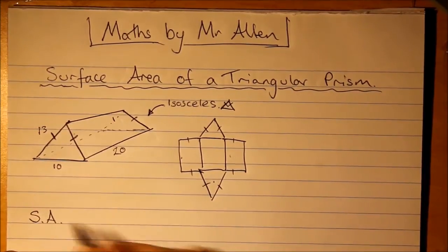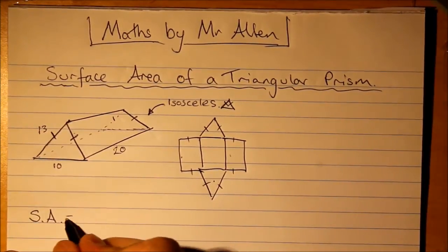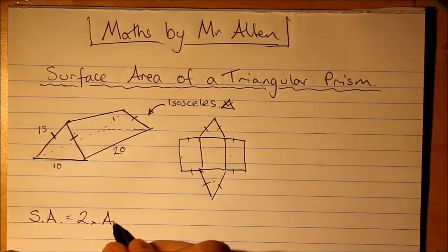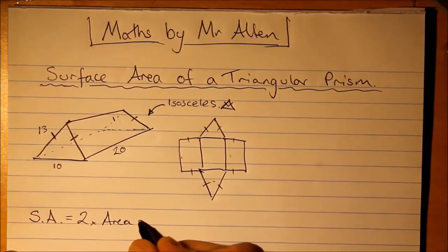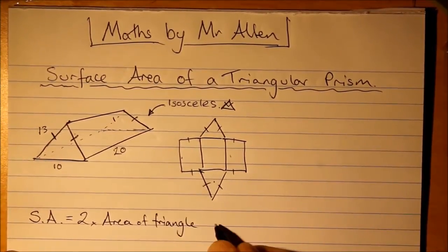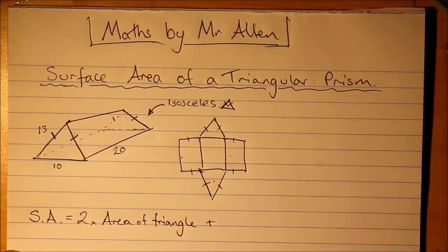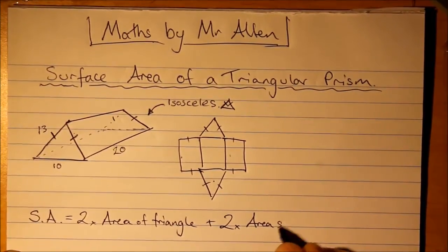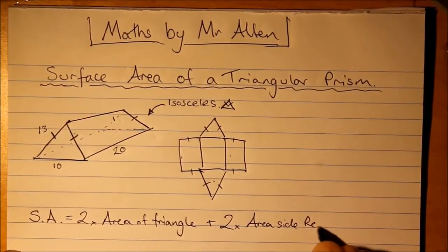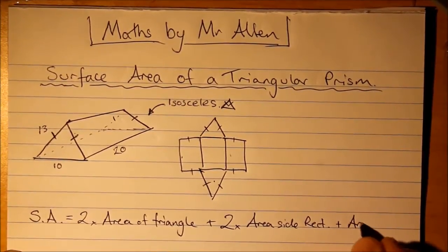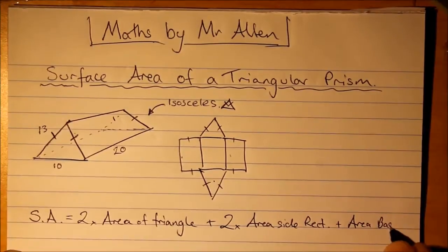So, here we go. Surface area is... well, two times area of that triangle plus, well, we'll call it the rectangles on the side. They're the same. So, two times area of the side rectangle, plus the area of the base rectangle.